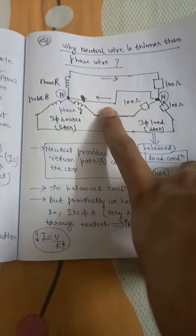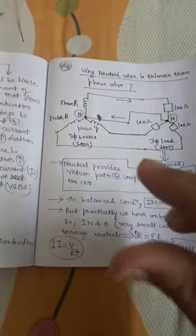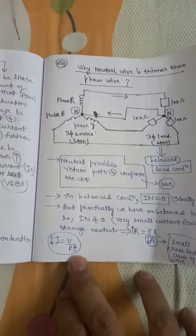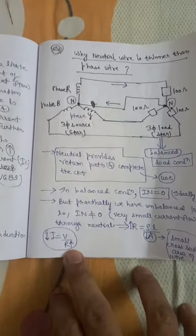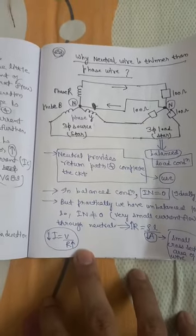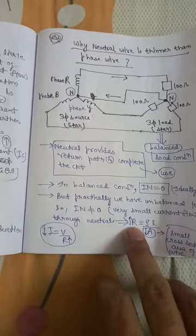But that current magnitude is very very small. Due to the small magnitude of current, resistance will become very high by formula I equal to V by R, and if resistance becomes very high then...